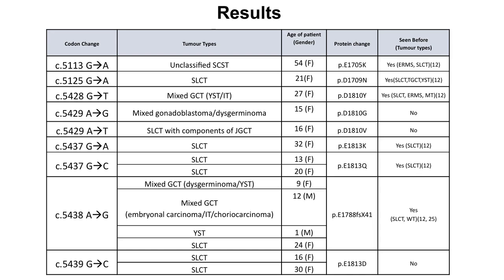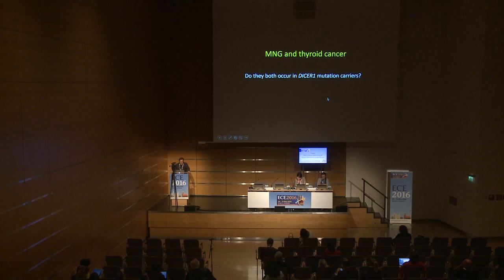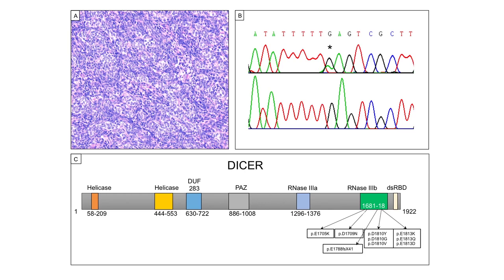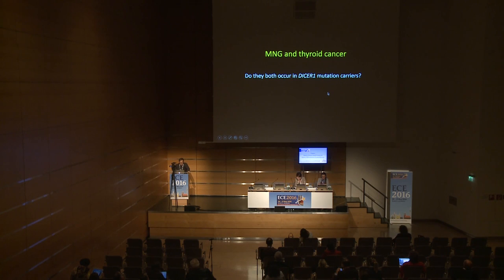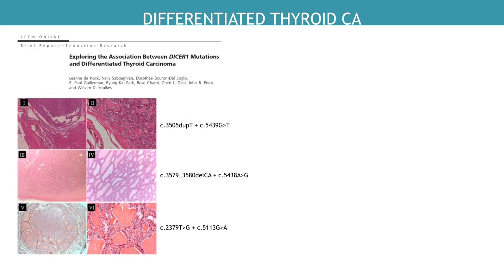These mutations were again all in the metal-binding domains of the RNH3B region. What about goiter and thyroid cancer? We knew goiter occurred, but weren't sure about thyroid cancer — it wasn't in the original description. We published a paper in JCM showing three different germline mutations with somatic mutations in the 3B domain, confirming these differentiated thyroid cancers were caused by DISA mutations. Interestingly, all cases had been exposed to radiotherapy, bone marrow transplantation, or high-dose chemo because they had all had pleuropulmonary blastomas.